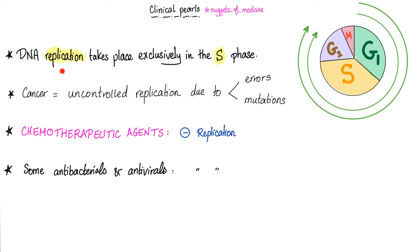DNA replication takes place exclusively in the S phase. Yes, S for synthesis. Cancer is nothing but uncontrolled replication due to errors and or mutations. Chemotherapeutic agents are nothing but replication inhibitors. Also, some antibacterials and antivirals inhibit the replication of the bacteria and or the virus, respectively.